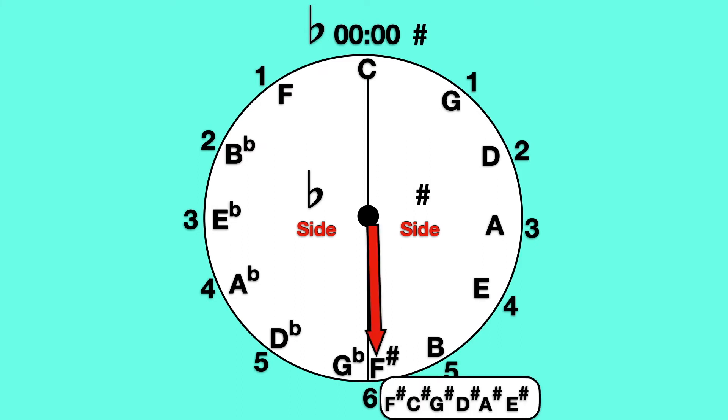F sharp major has six sharps: F sharp, C sharp, G sharp, D sharp, A sharp, and E sharp.